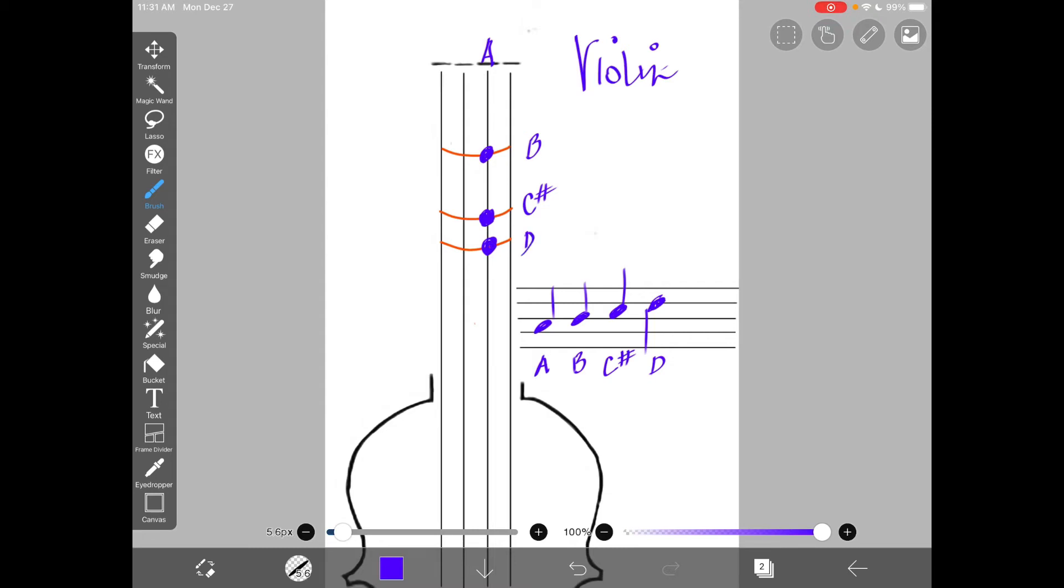And this D is one octave higher. We'll call it a high D. It's one octave higher than the open D string. Does that make sense? So it's the same tone, except it's one octave higher.